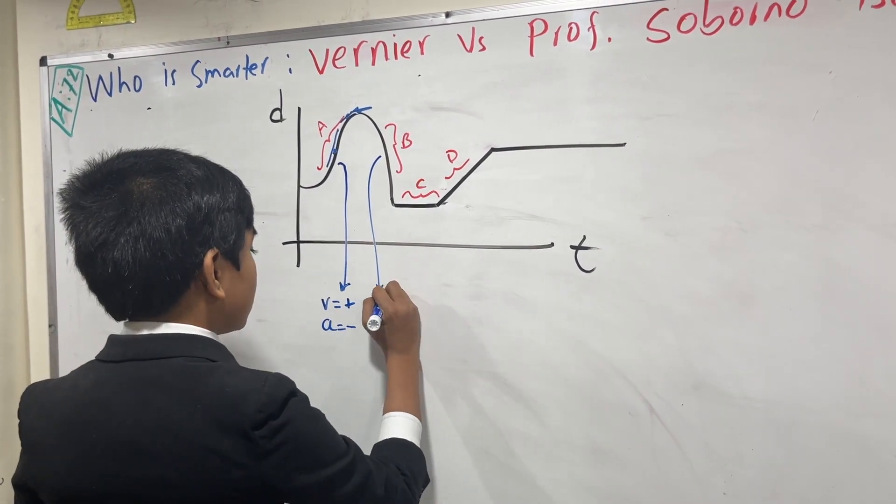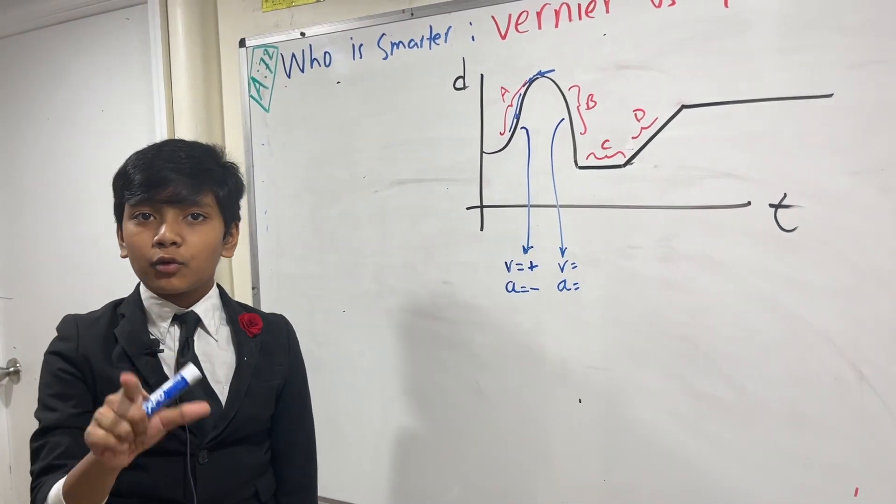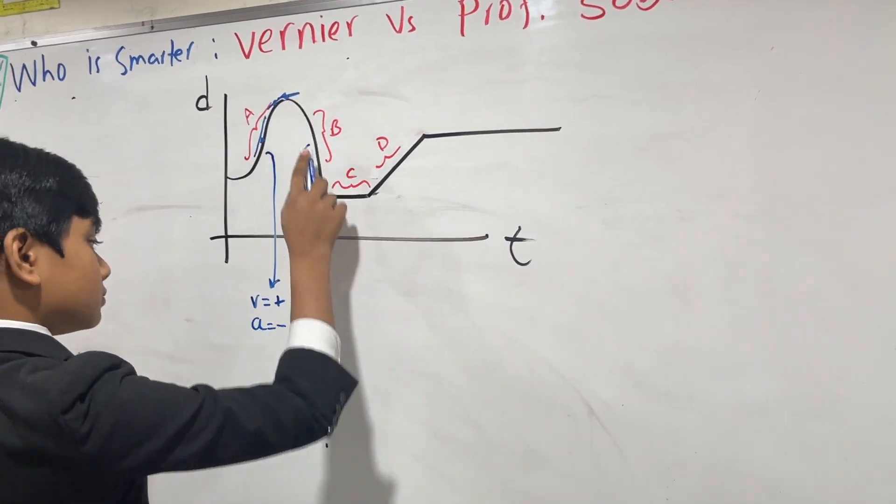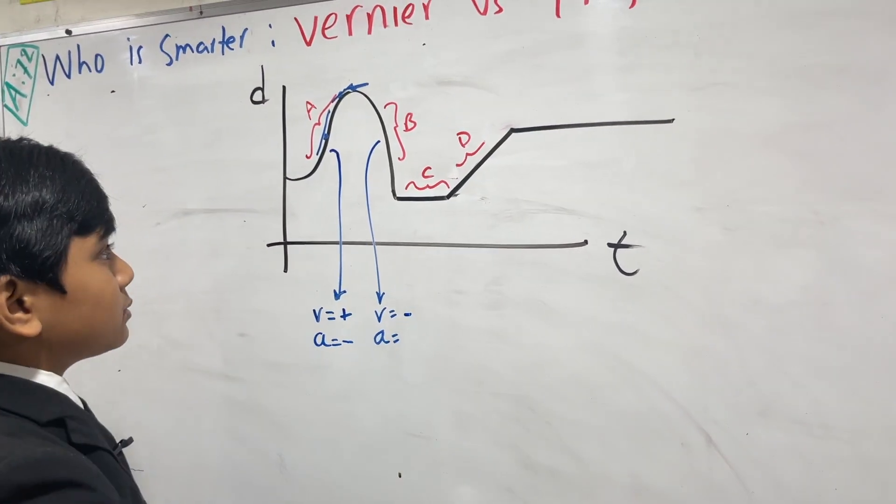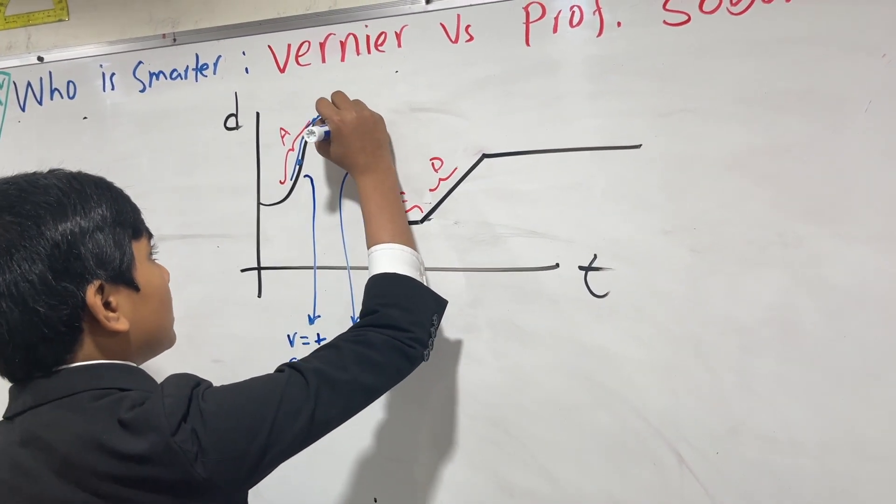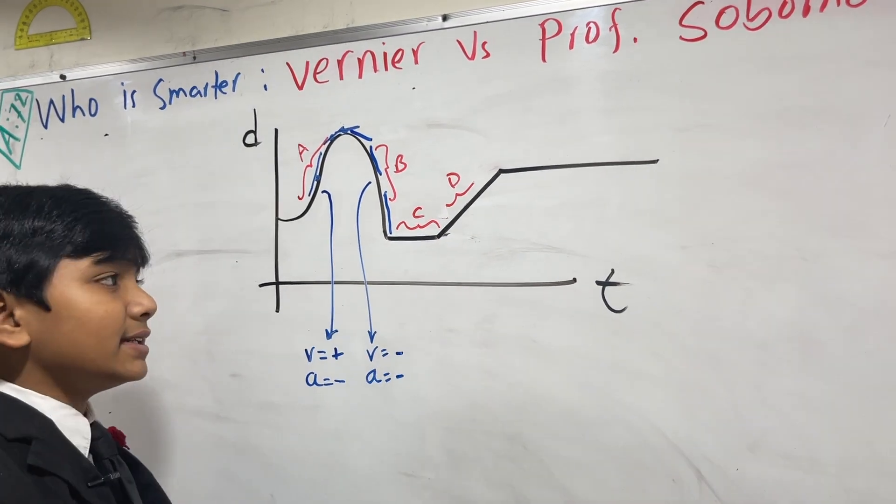And B, what is velocity and what is acceleration? Take five seconds to think about it. Five, four. Pause the video for more time. Two, one. Alright. So, here, the velocity is negative because displacement is decreasing, obviously. You can see it's getting more negative because the slope is falling farther and farther, so acceleration is negative here, too.